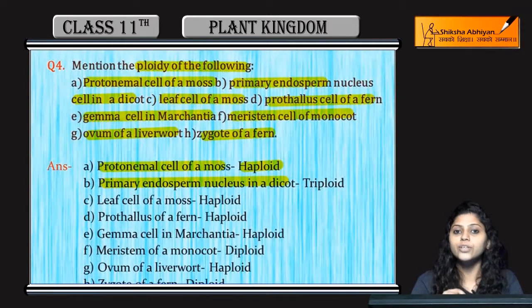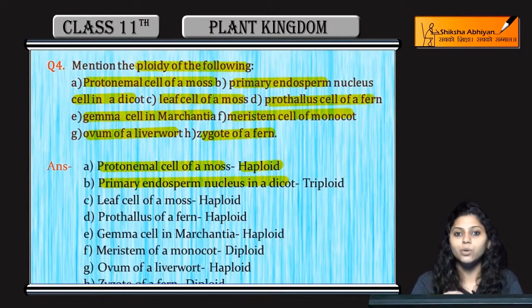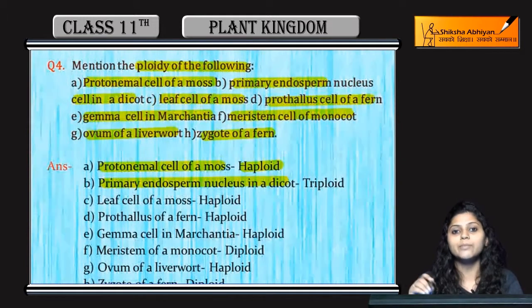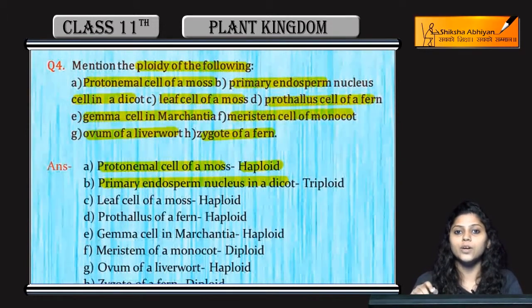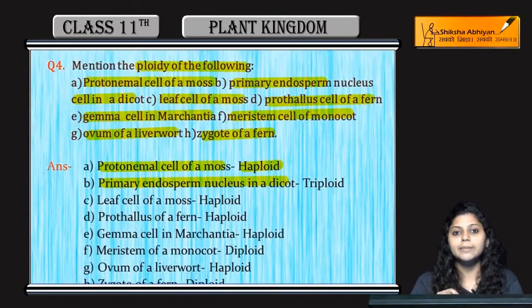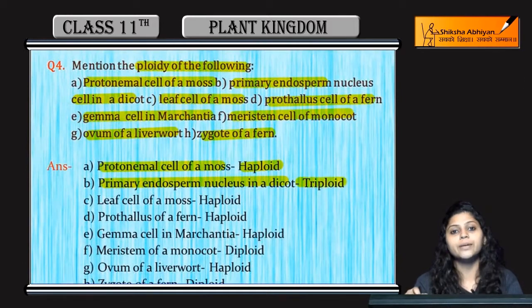The secondary diploid nucleus is already diploid, and the male gametophyte is haploid. A diploid and haploid fusion becomes diploid.